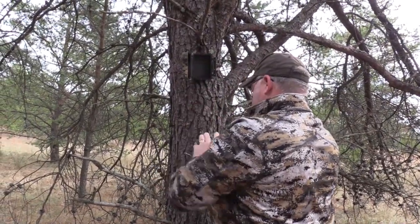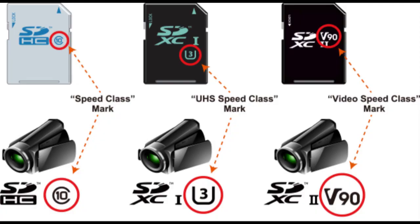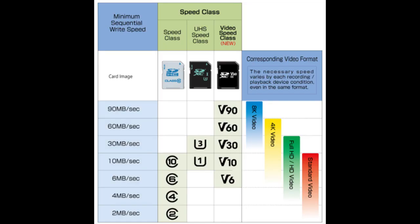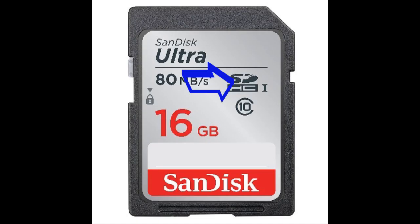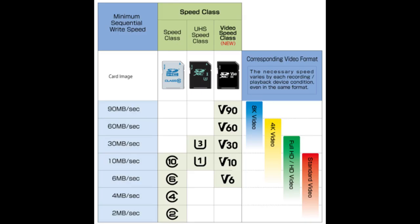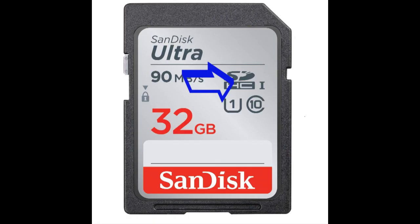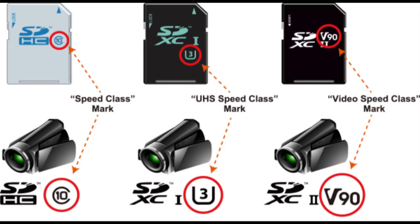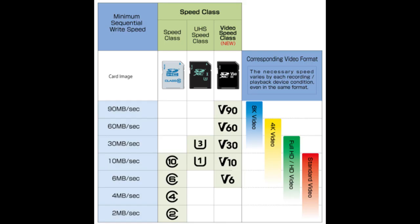Let's talk through what these numbers and symbols on SD cards mean. When you see a circle with a number in it, that's the class of the SD card — they come in classes 2, 4, 6, and 10, representing write speeds. Class 10 is the fastest and equals Ultra High Speed number one, so if you see a U with a 1 in it, that's a class 10. Ultra High Speed also comes in class U1 or U3.